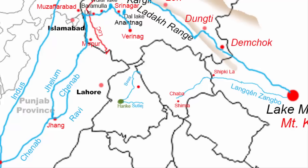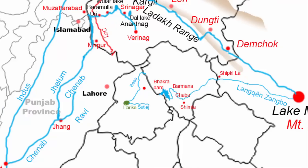On reaching Chaba, the river changes its course to north-west and flows in that direction for about 40 km. On reaching the village of Barmana in Bilaspur district of Himachal Pradesh, the river turns south-west for about 25 km, then again turns north-west where the Sutlej is held by the famous Bhakra Dam, forming the Gobind Sagar reservoir. This area is just 15 km from the Himachal-Punjab border. The river then enters Punjab from the town of Nangal in the Rupnagar district.